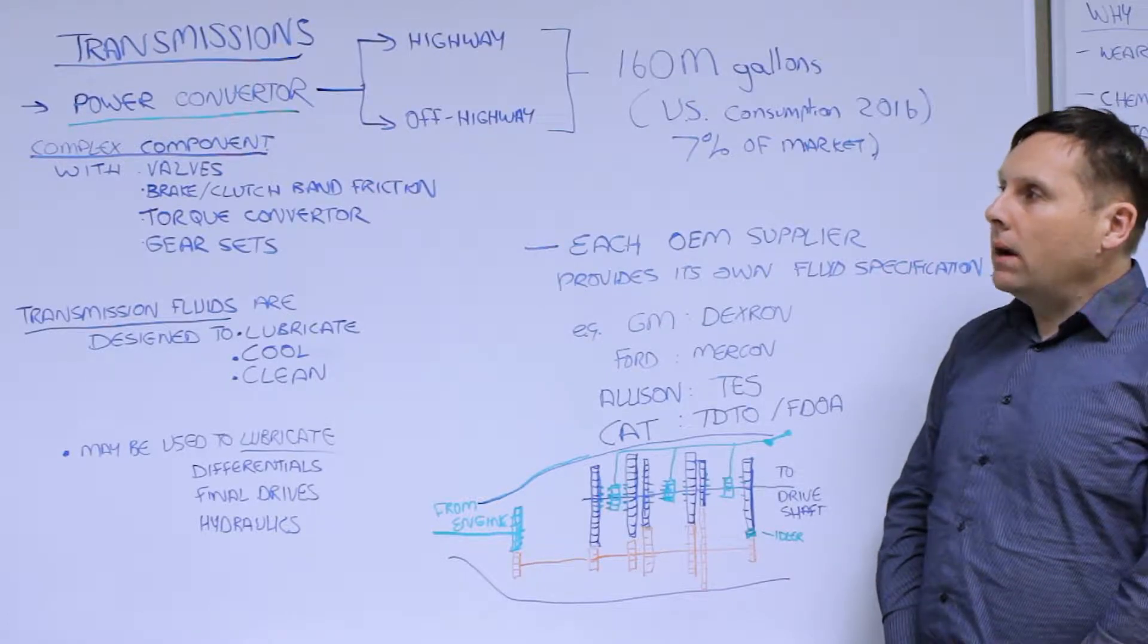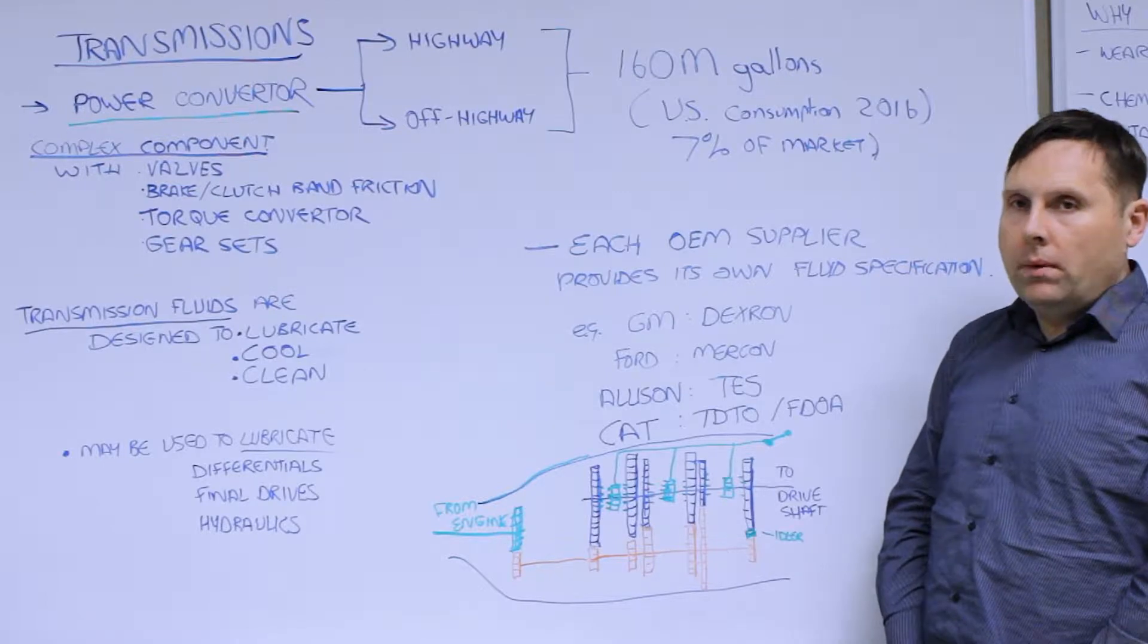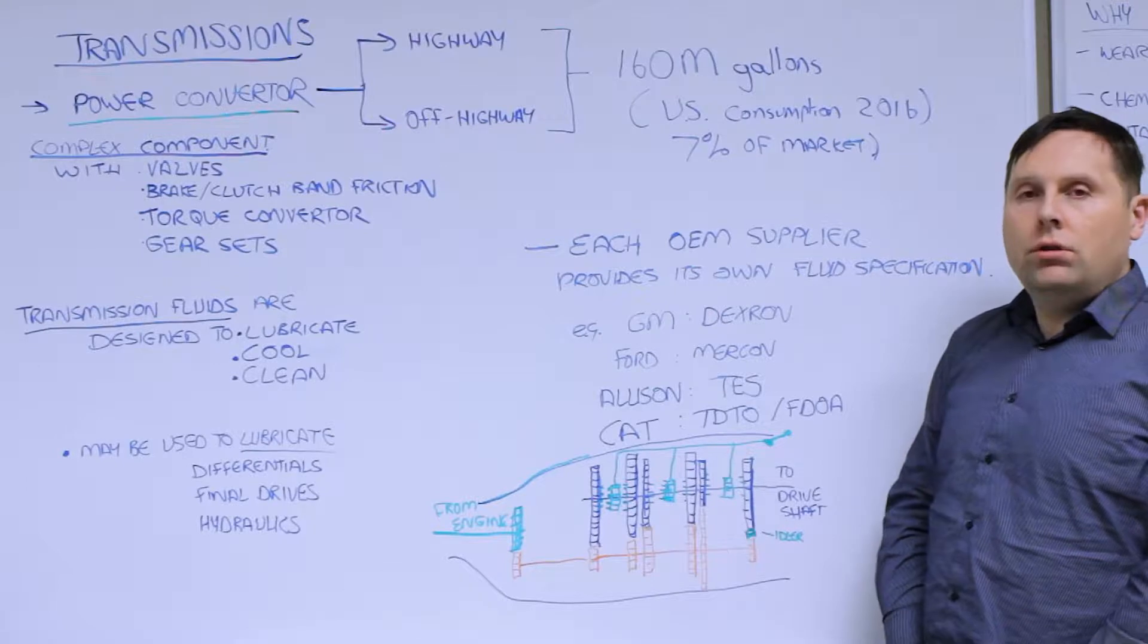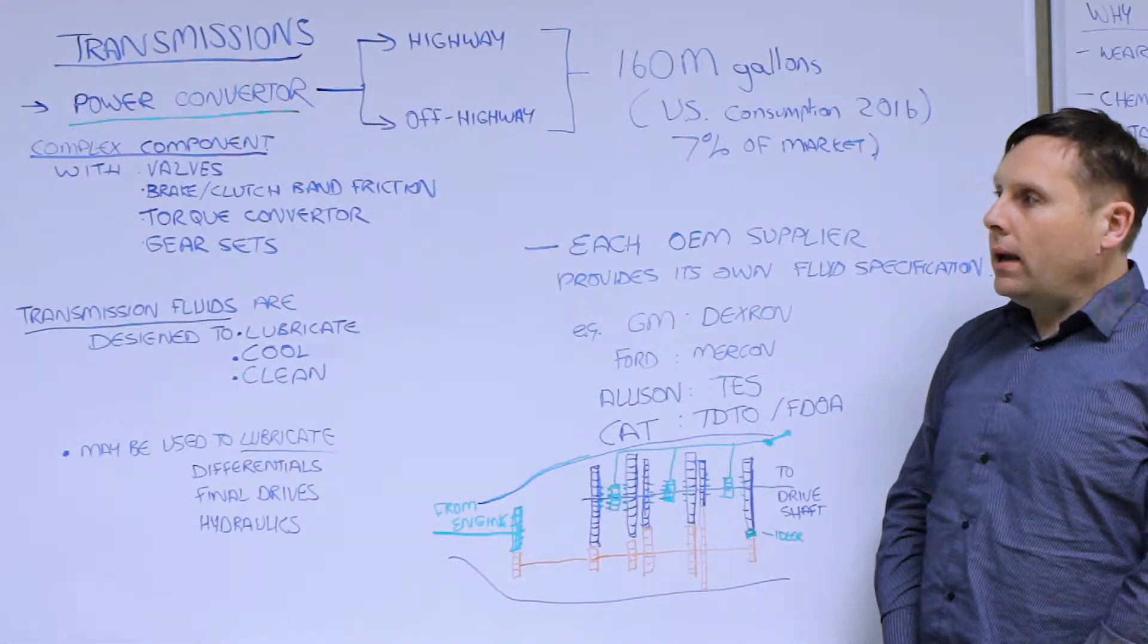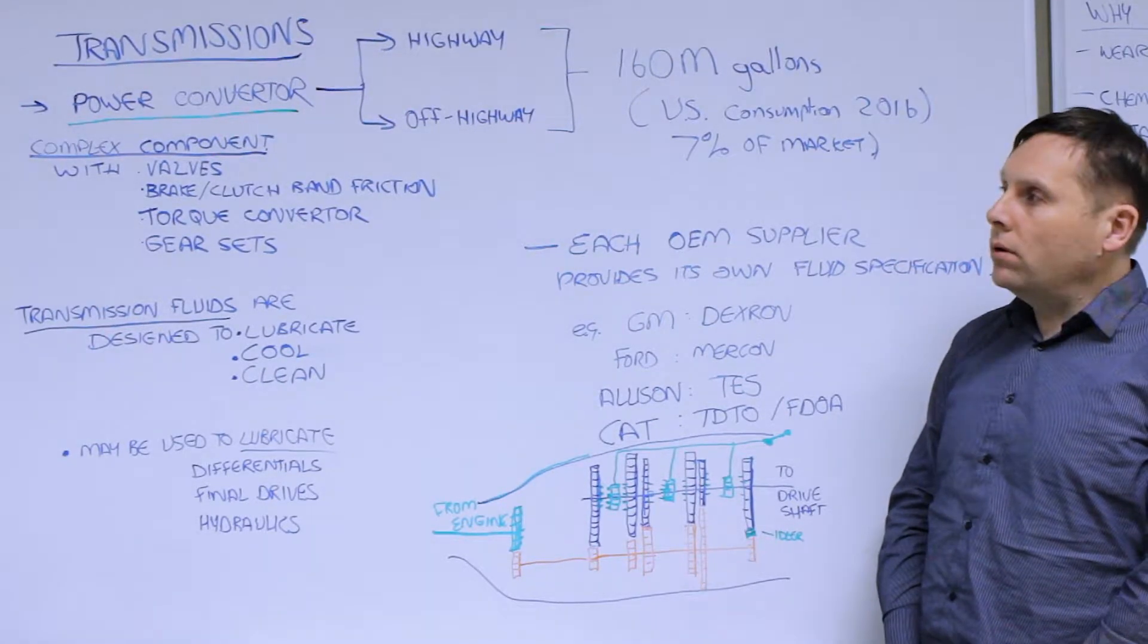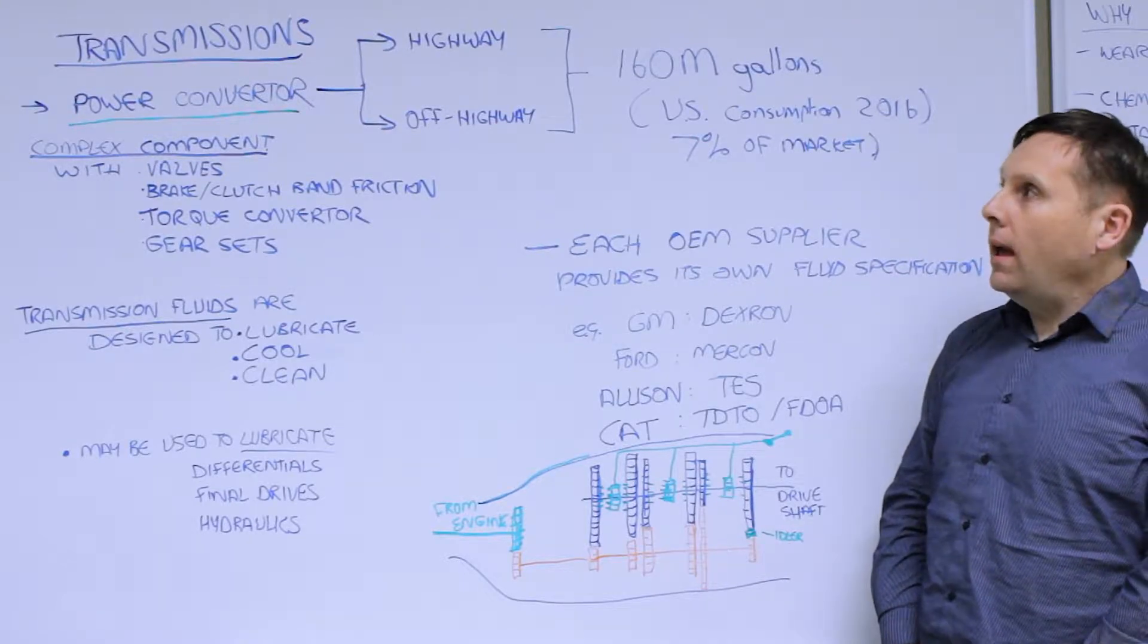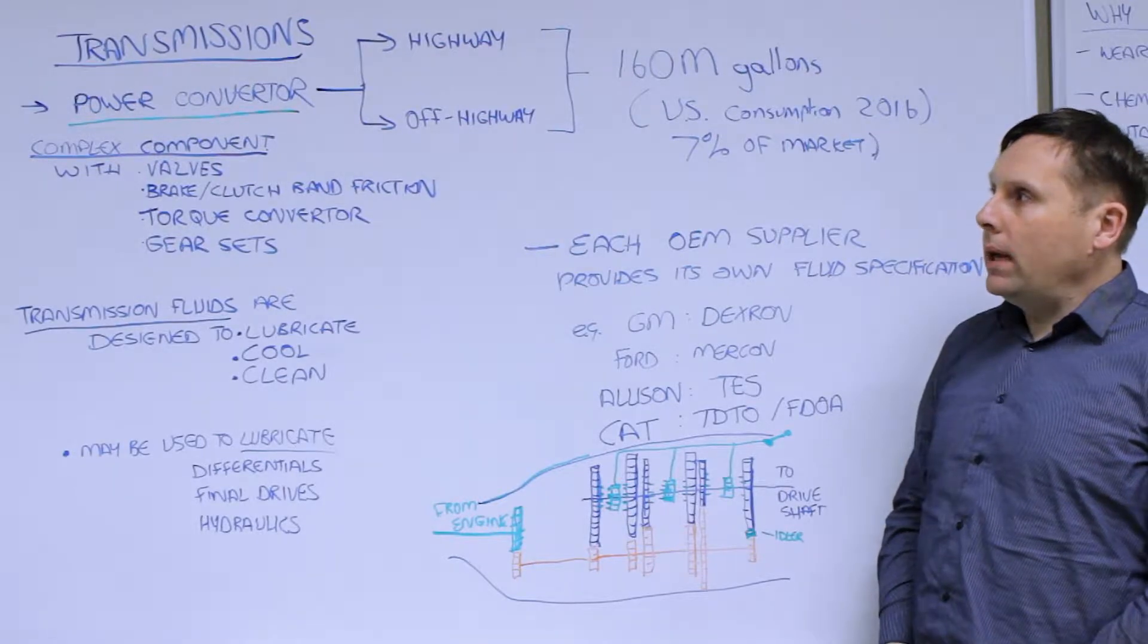It is a very complex component usually associated with mobile equipment. It is complex because it has, in addition to the traditional gear sets, brake and clutch band friction discs, torque converters, and valves all on this device. And it is widely used for mobile applications.